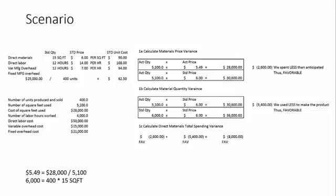The second thing we will do is calculate the material quantity variance. Here we use the standard price of $6 in both calculations, but now we compare the actual quantity used — 5,100 square feet — against the standard quantity of 6,000. That standard quantity comes from 400 units of production times 15 square feet per unit. So 5,100 times $6 gives us $30,600, and 6,000 times $6 gives us $36,000. We used less material than expected — a $5,400 favorable material quantity variance.